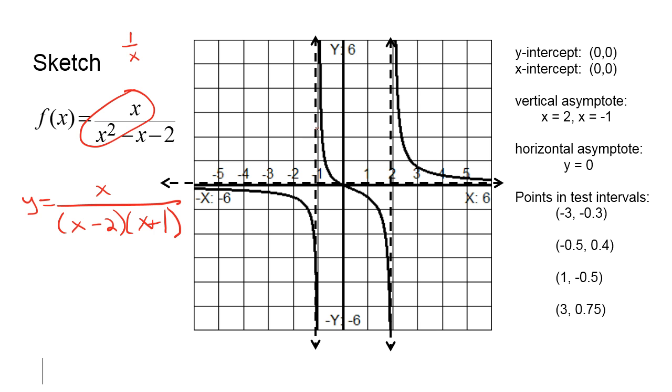And then if I put in a value to the left of this asymptote, in between the asymptote and the intercept, that's my negative 0.5, in between the intercept and the next asymptote, that's 1, and then to the right of my last asymptote, that's 3. That will give me some points that will help me graph this correctly.